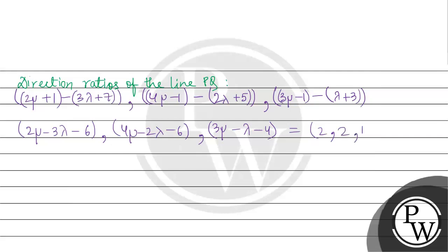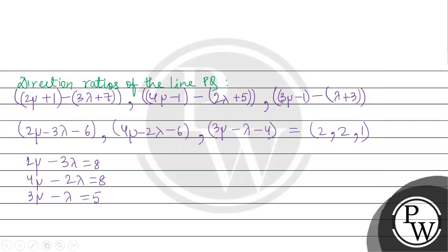Since the direction ratios of BQ are given as 2:1:1, we set up proportional equations. Simplifying, we get: 2μ minus 2λ minus 2 equals 8, four μ minus 2λ minus 6 equals 8, and 3μ minus λ minus 4 equals 5. For three equations we solve using equation one, equation two, and equation three.